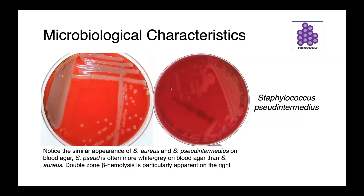In this slide you can see Staphylococcus pseudintermedius, which is a very important organism in companion animal practice. Staph pseudintermedius is morphologically quite similar to Staphylococcus aureus — we have double-zone hemolysis — but the colonies are more white or gray as compared to Staph aureus, which tends to be a little more creamy or yellow colored.